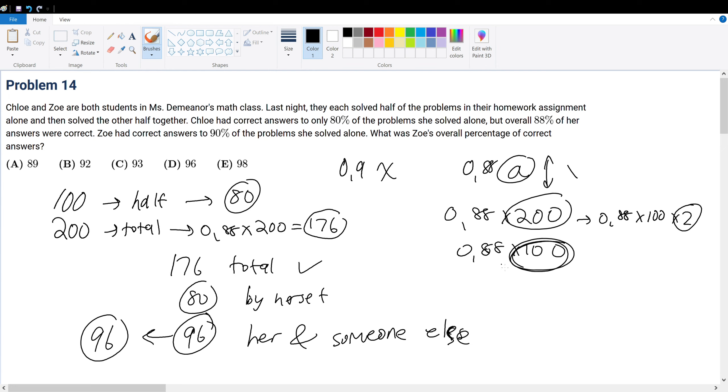So what was Zoe's overall percentage of correct answers? She had 96 solved correctly with her buddy, but we know that Zoe solved 90% of the problems by herself, so we must add 90 to get the total. 96 plus 90 equals 186. Divided by 200 total, we get 186 over 200.